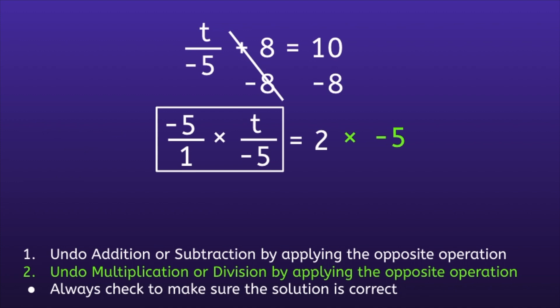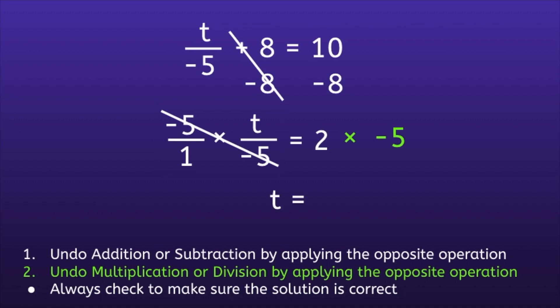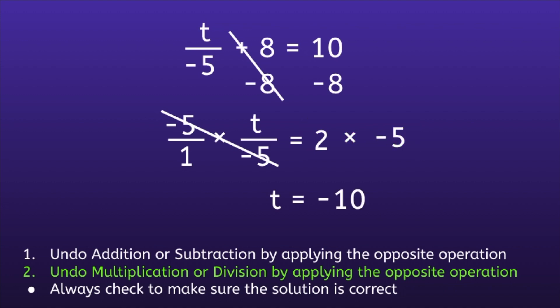So if we go back to the problem, we can cross out the 5s. We also know that there's a 1 in front of that t, so we can cancel the 1s, and that'll leave us with just t. If we focus in on the right side, 2 times negative 5 is equal to negative 10. And we have our solution: t is equal to negative 10.